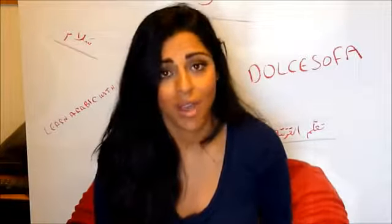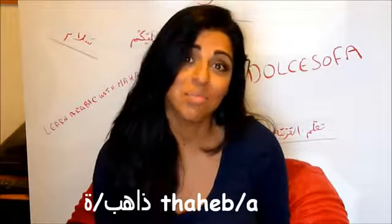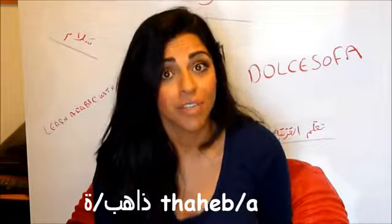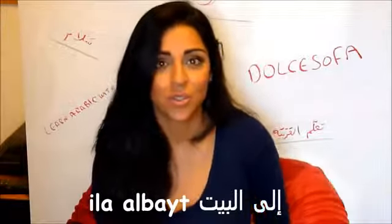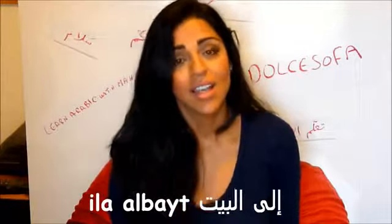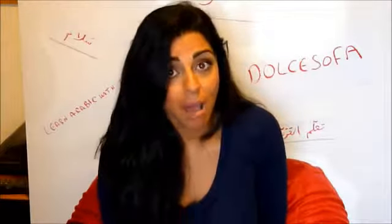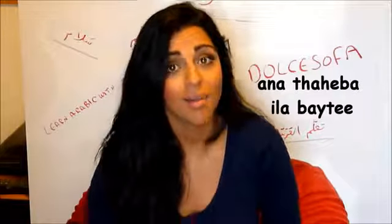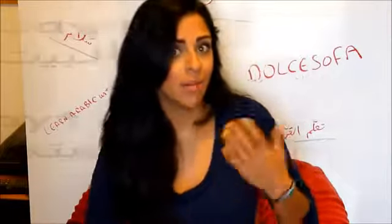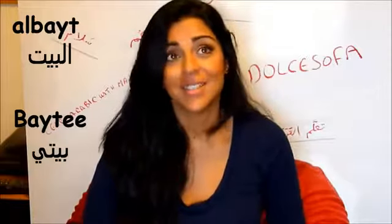For the second sentence, I want to say I'm going to my house. Ana dahib ila albayt — ana means 'I', dahib means 'I'm going', ila albayt means 'to the house'. If you're female, you say dahiba instead: ana dahiba ila albayt. You can also say 'ana dahiba ila bayti' — ila bayti means 'to my house'. So it's either albayt (the house) or bayti (my house).